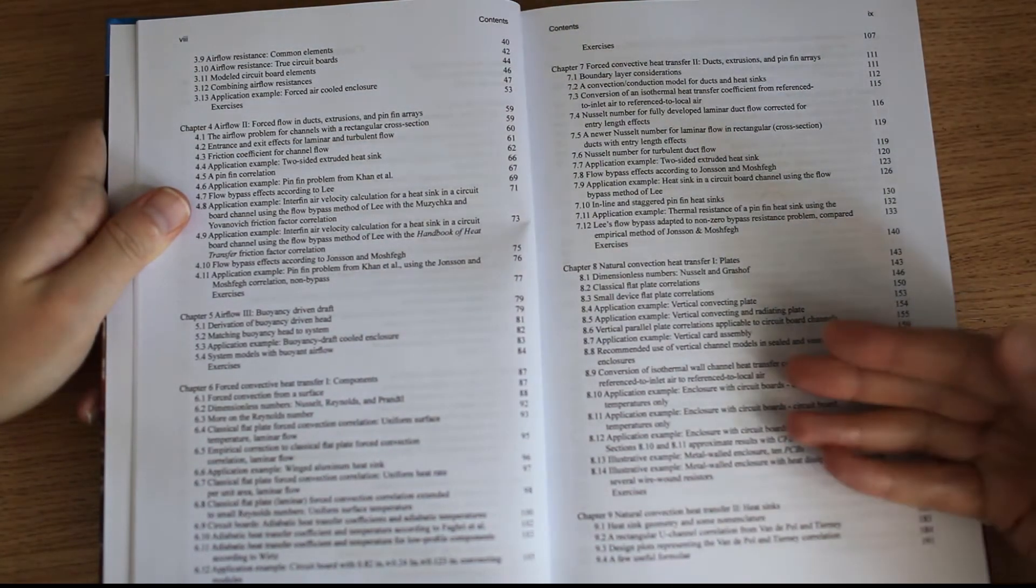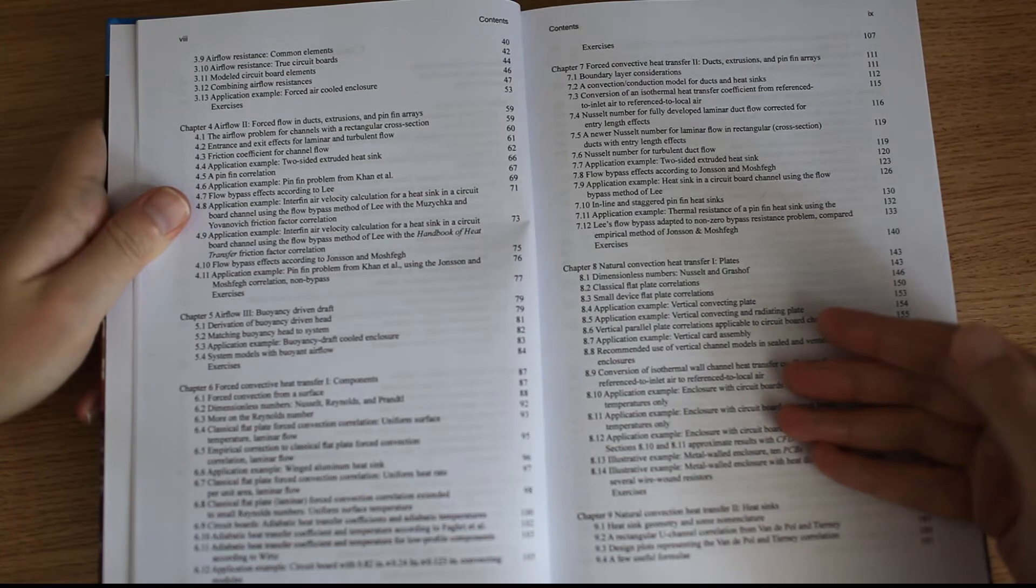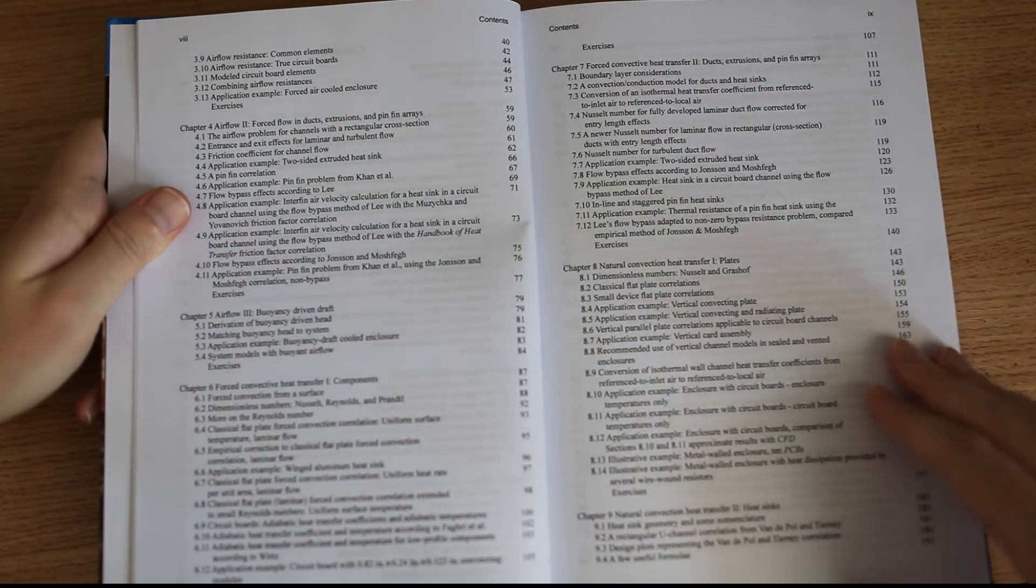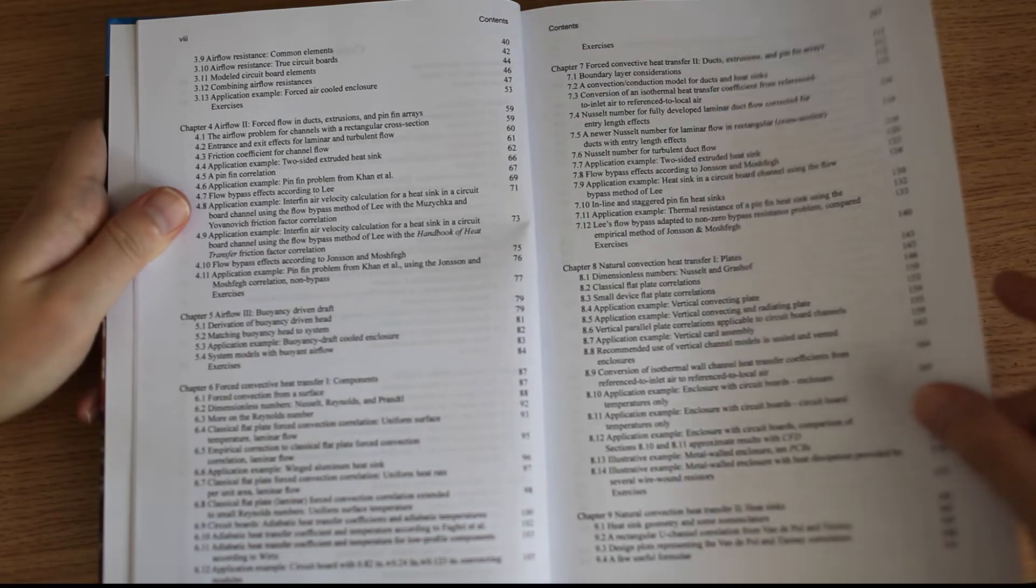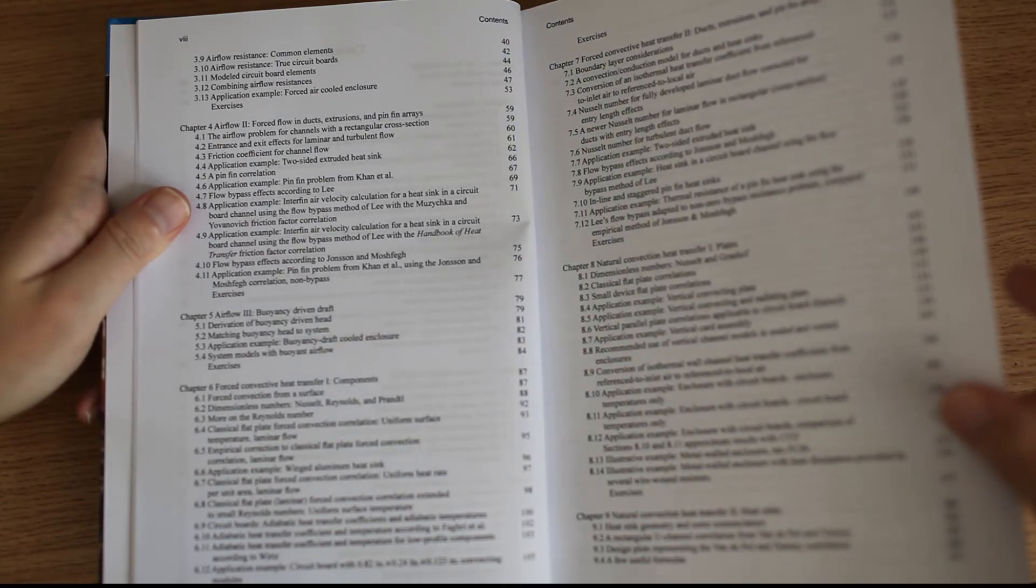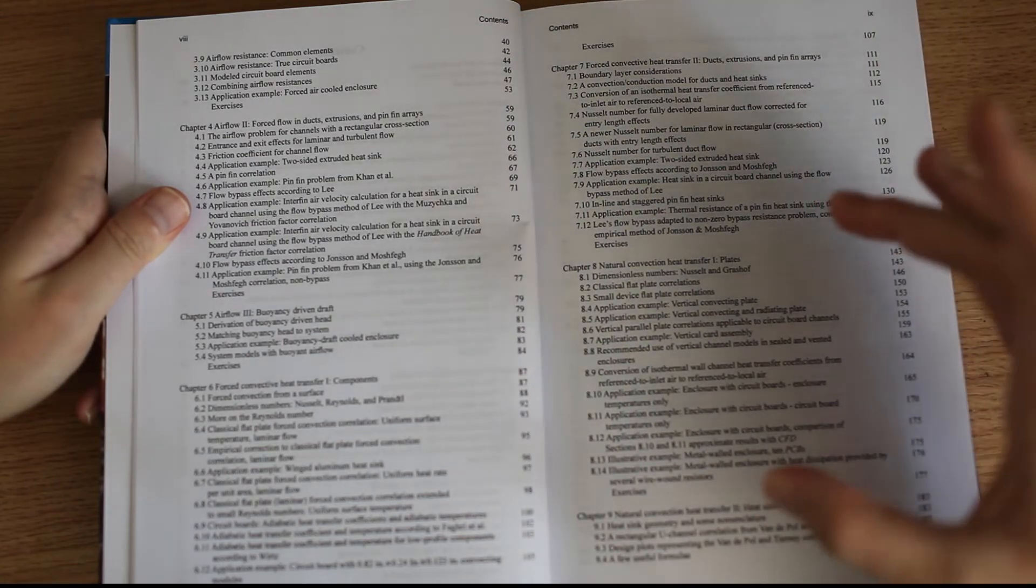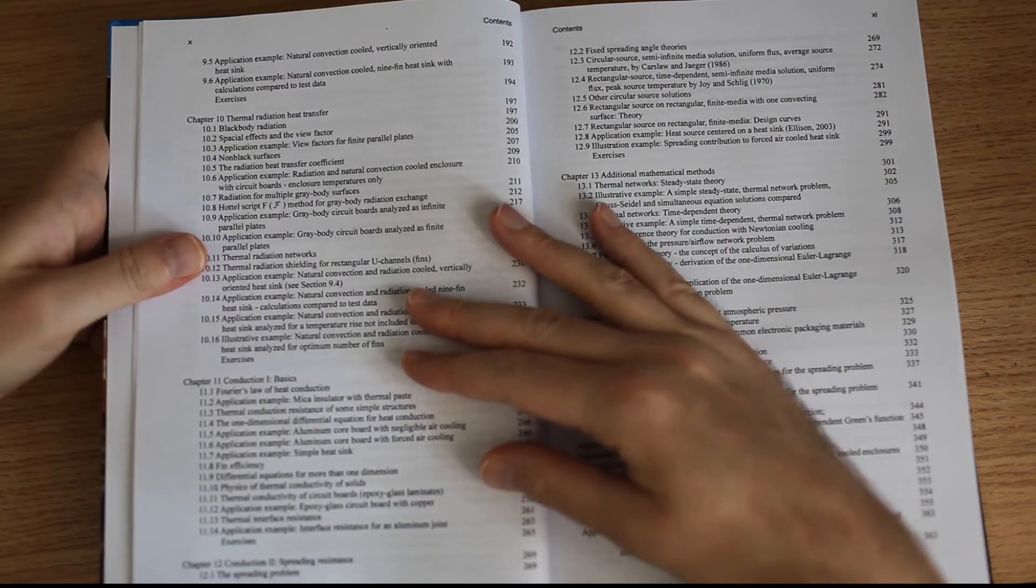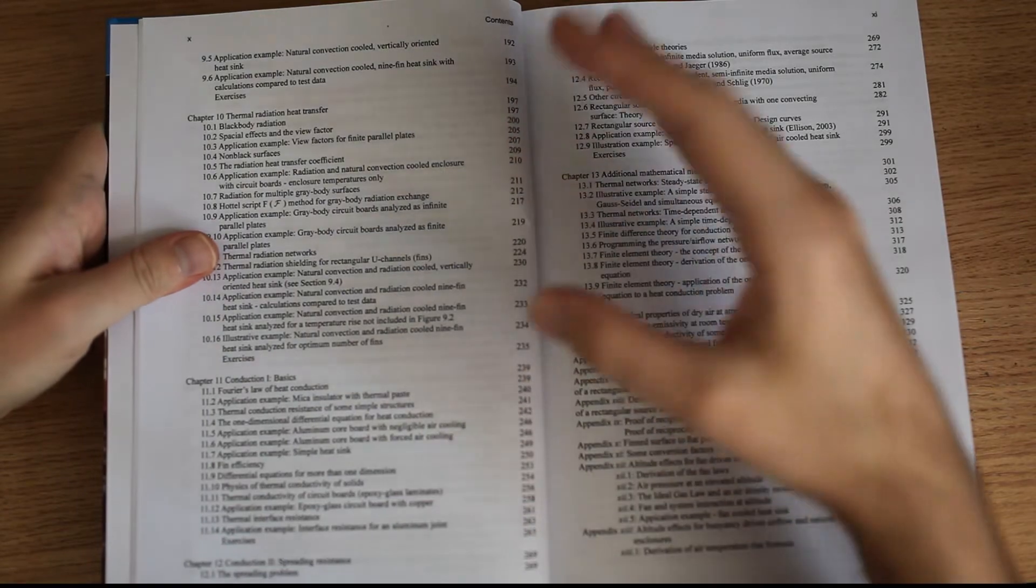And then it talks about natural convection, which is sometimes a bit more tricky. And you have also analysis of different kinds of systems: plates, heat sinks.